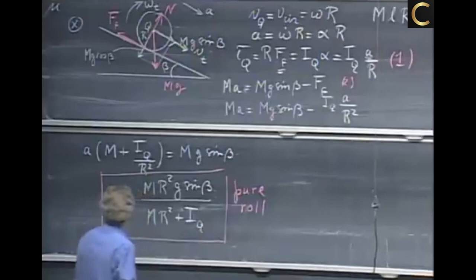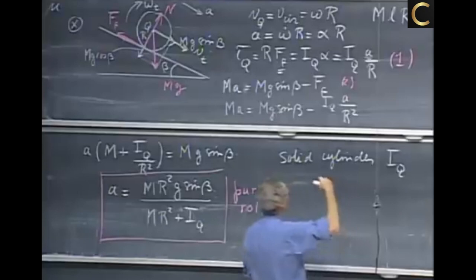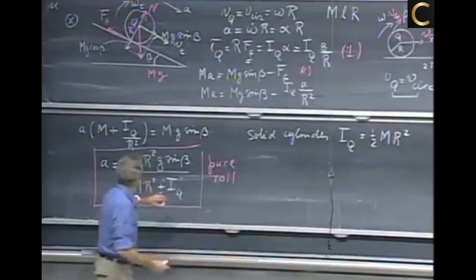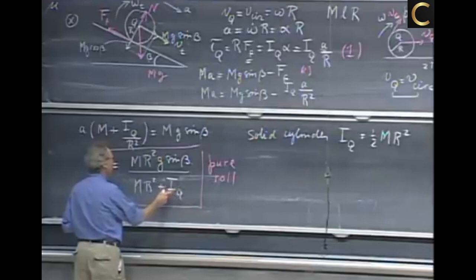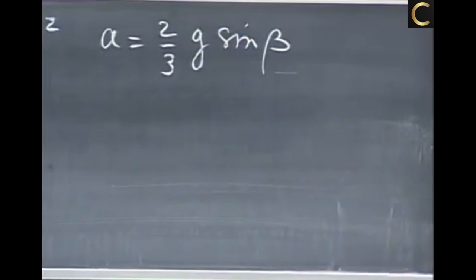So we can now substitute in there the values that we have for a solid cylinder. If we have a solid cylinder, then the moment of inertia about this axis through the center of mass, which I've called Q, equals one-half mr². And if I substitute that in here, notice that all my mr squares go away, I get one plus one-half, which is one and a half, upside down becomes two-thirds. So a equals two-thirds times g times the sine of beta. There is no m, there is no l, and there is no r.